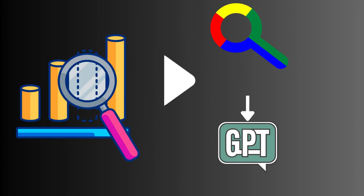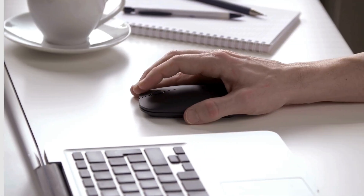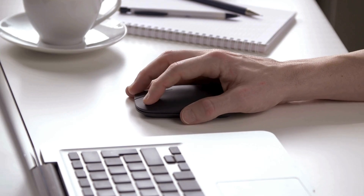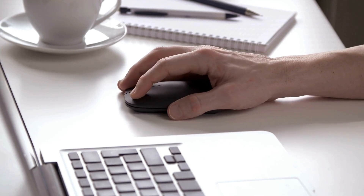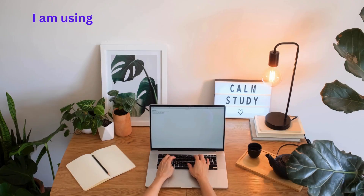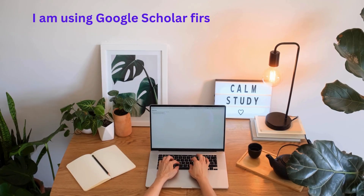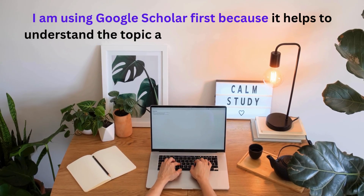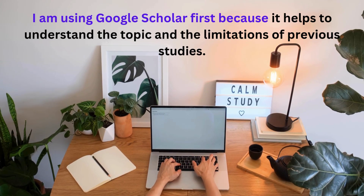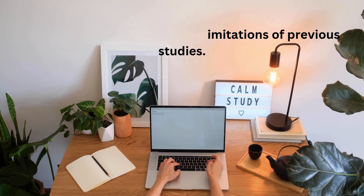In this video, I am going to show you how to find authentic research gaps with the help of Google Scholar and ChatGPT. Please make sure to check out my previous video on research gap types and examples. I am using Google Scholar first because it helps to understand the topic and the limitations of previous studies.